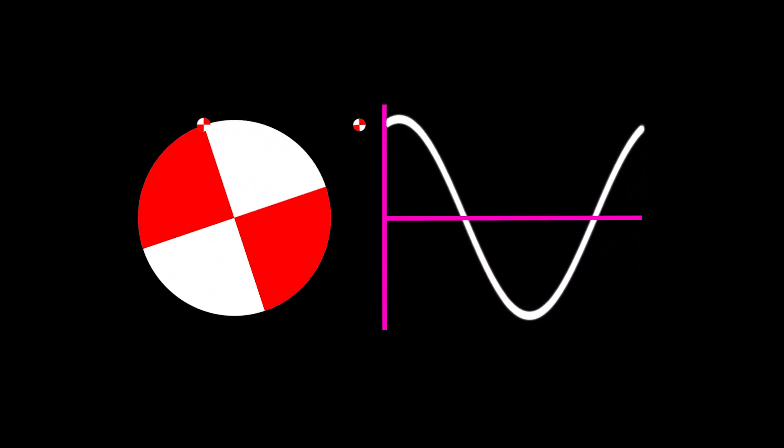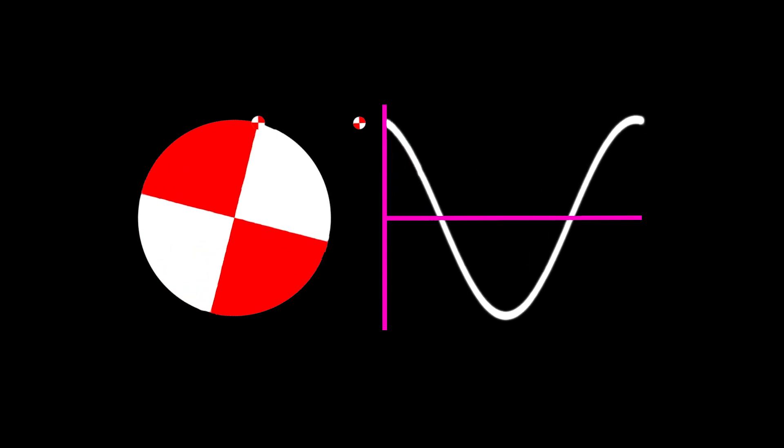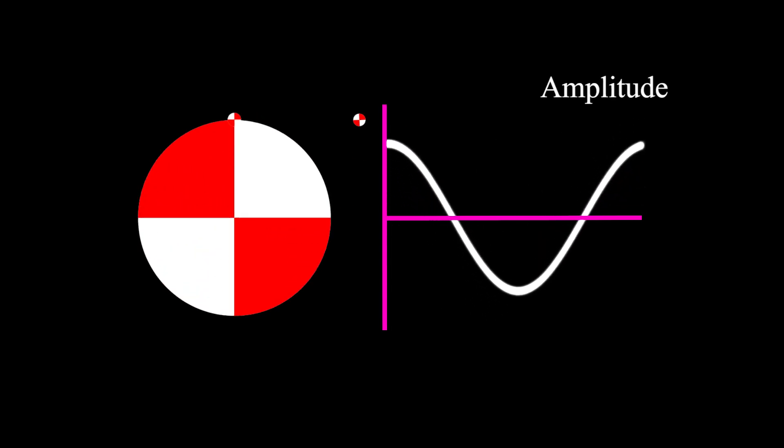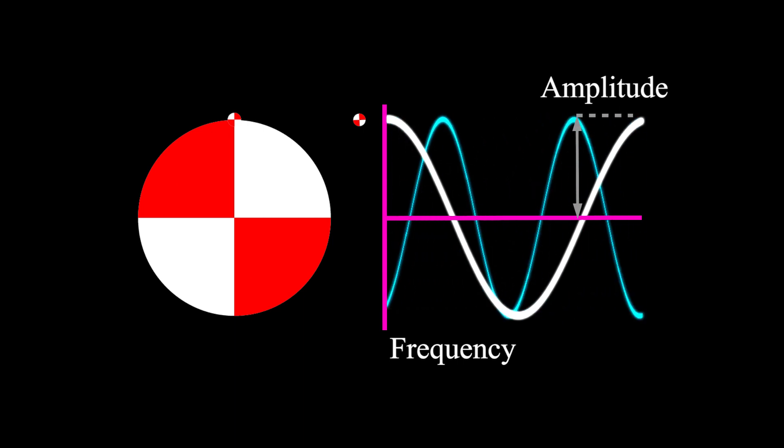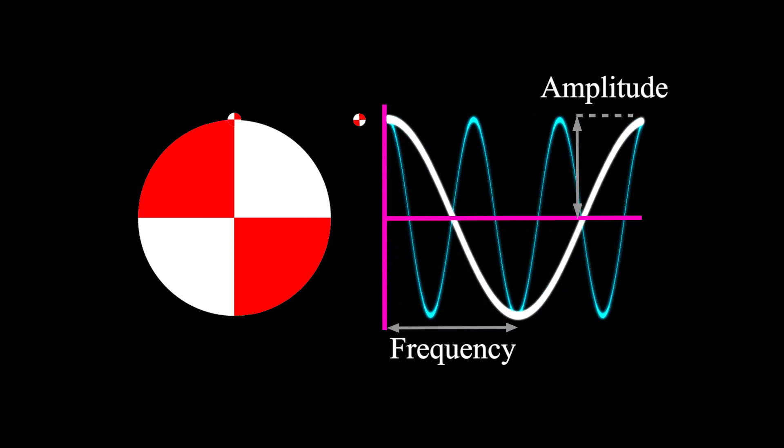Further, our sinusoid can be completely defined by three properties: the amplitude, which is the vertical measure of the wave; frequency, in this case cycles per second, or the period; and the phase, which is defined as a shift at zero time.